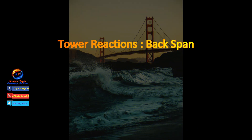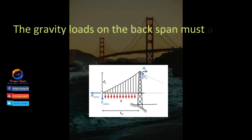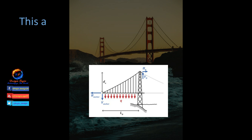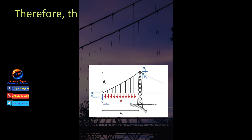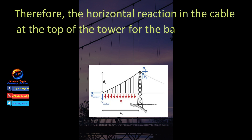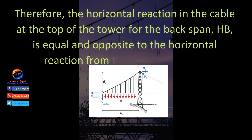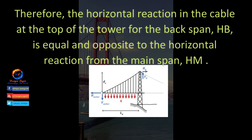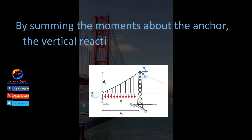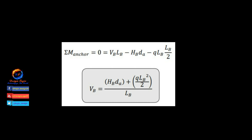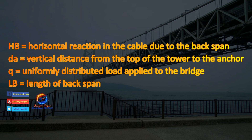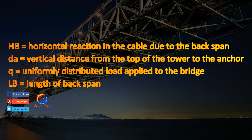The gravity loads on the back span must also be supported by the towers. This analysis assumes that no other external horizontal force acts on the tower, such as wind. Therefore the horizontal reaction in the cable at the top of the tower for the back span, Hb, is equal and opposite to the horizontal reaction from the main span Hm. By summing the moments about the anchor, the vertical reaction due to the back span, Vb, at each tower is calculated using: Vb = (Hb·d − q·Lb² / 2) / Lb, where Hb is the horizontal reaction, d is the vertical distance from the top of the tower to the anchor, q is the UDL, and Lb is the length of the back span.